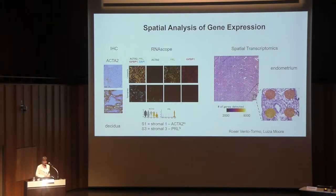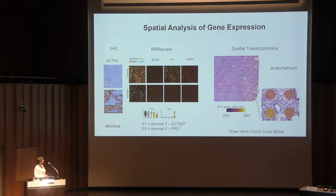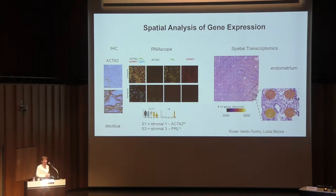Here are two examples of the spatial analysis techniques we're using. This RNA scope experiment demonstrated that there were two new stromal cell populations in the decidua that located to different regions — the decidua compacta and spongiosa — which are clearly distinct in terms of staining pattern. It's very useful to use RNA scope to validate findings from the single cell data.